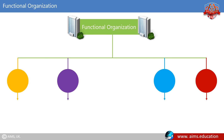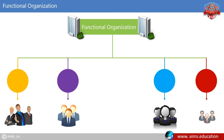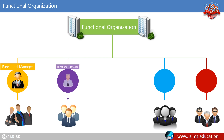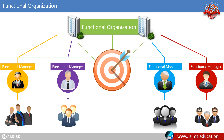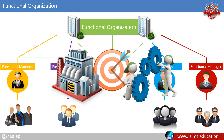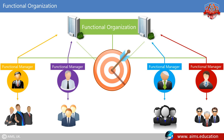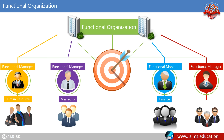A functional organization structure is a hierarchical type of organizational structure wherein people are grouped as per their area of specialization and supervised by the functional manager with expertise in the same field. This way, their skills can be effectively utilized and the organization's objectives can be achieved. The functional organizational structure is suitable for organizations with ongoing operations, such as manufacturing and production. A functional organization is divided into various specific departments like human resource, marketing, finance, and operations.